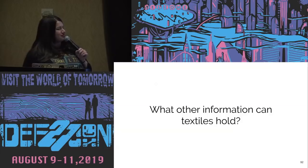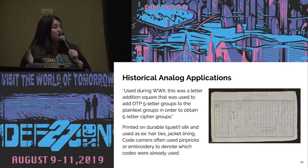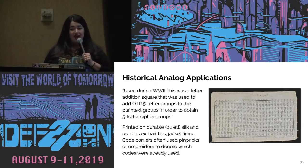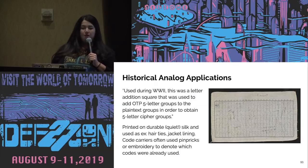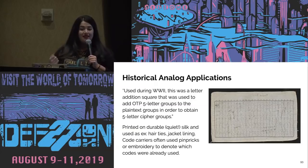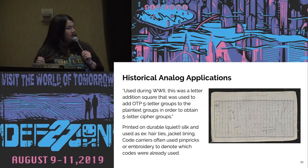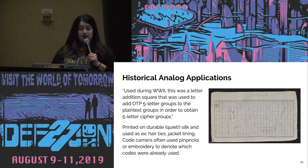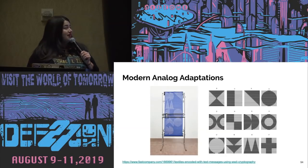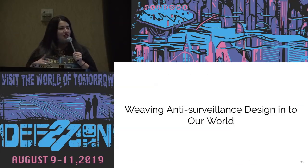A sprinkling of other ideas from the crypto village: there are historical analog applications for fabric. This is a letter addition square used to add five-letter groups to a cipher. Spies would have them in the lining of their jacket, tie their hair up with them, or put them in their knitting bags — printed on silk, reasonably durable. They would put pinpricks or embroidery in them to denote they had been used. There are also people working on embedding substitution ciphers in fabrics and weaving them in — they can be done big or small.